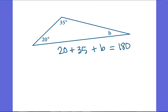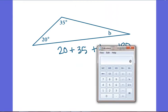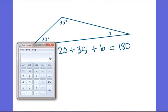So in order to solve, I'm going to take my handy dandy calculator, and I'm going to start with my 180 degrees. I'm going to subtract the 20 degrees that I know I already have. I'm going to subtract the 35 degrees that I also have,